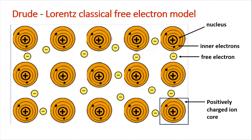As per this model, the metal consists of positively charged ion cores, which are in turn made up of a positively charged nucleus and inner electrons. These ion cores are fixed at the lattice points. Free electrons are free to move within the metal — they are the valence electrons loosely bound to the nucleus. There is a sea of free electrons, and these free electrons are compared to gaseous molecules. This was the basic idea of the Drude-Lorentz or classical free electron model.